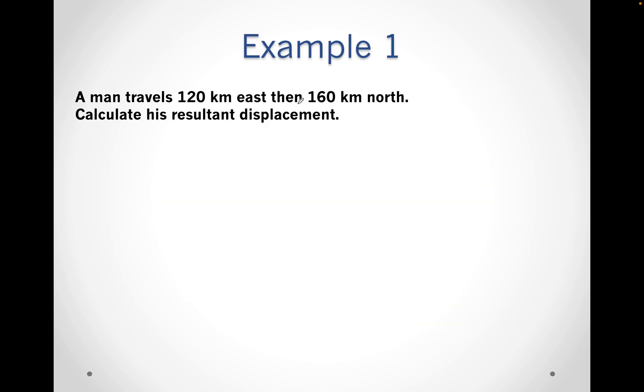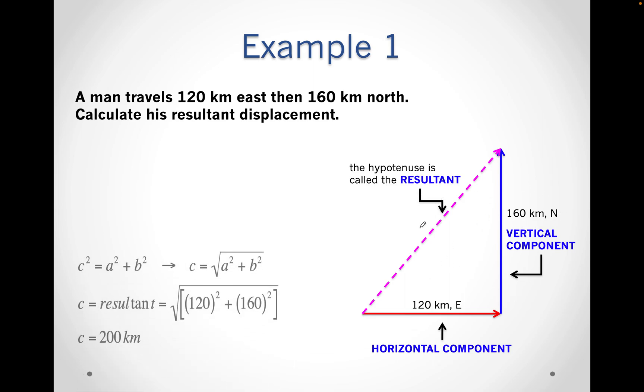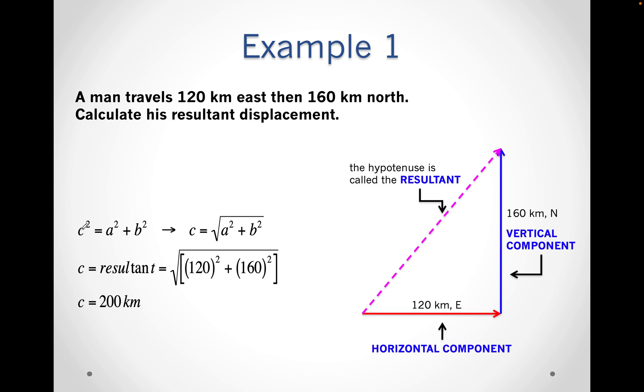Here is an example. Somebody travels 120 kilometers east, 160 north. What is the result? So quickly draw a picture, draw a quick sketch. You'll have something like this, and then you'll have a result going in this triangular direction. This is the horizontal and this is the vertical. This is the result that we're going to try and find. So we'll use Pythagoras: C squared equals A squared plus B squared. 120 squared plus 160 squared, take the square root and your result will be 200 kilometers.